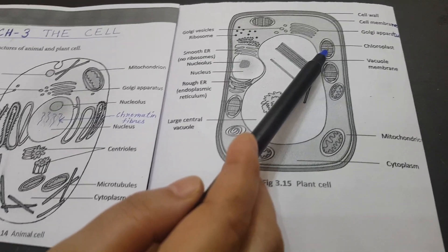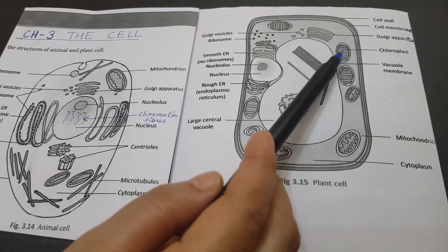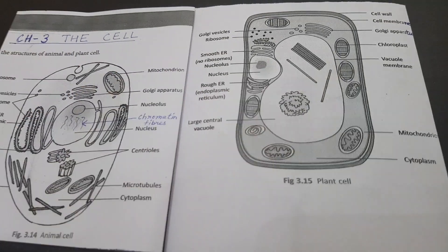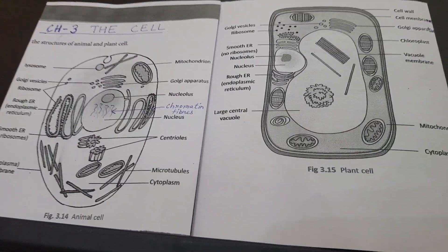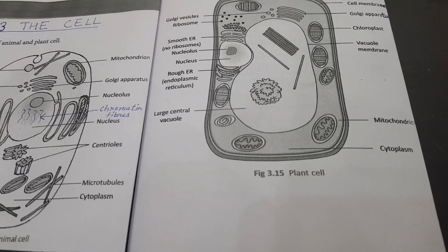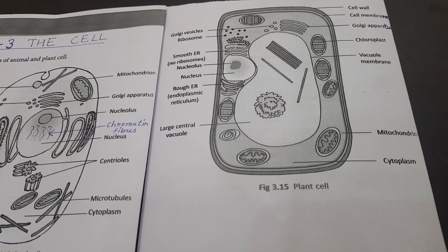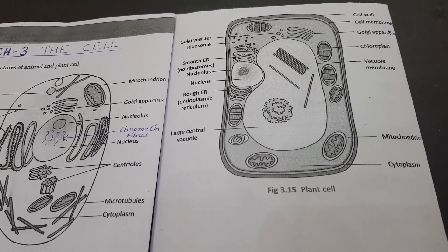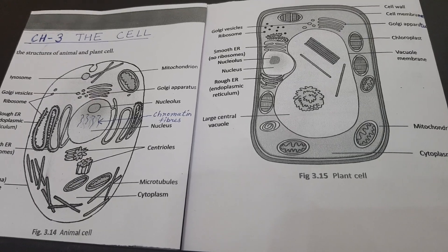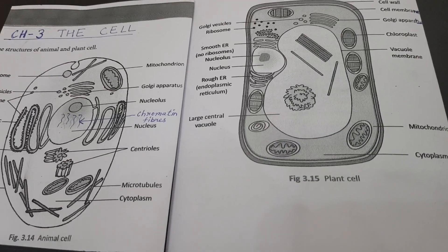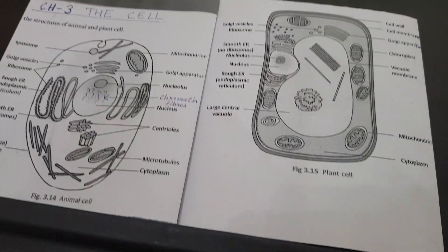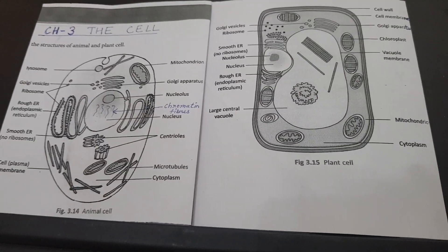Chloroplasts help in the making of food by green plants. The second type is chromoplast, which are colored pigments providing red, yellow, and orange color. The third type is leucoplasts, which lack any pigment and are called colorless plastids. They help in storing food prepared by plants in the form of starch, fat, and proteins.